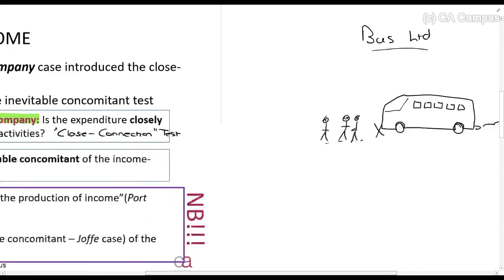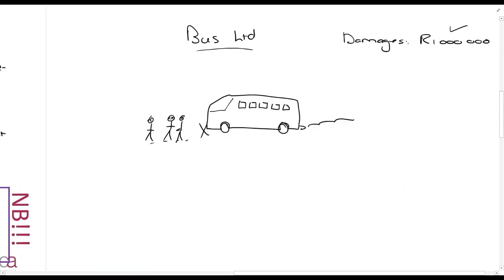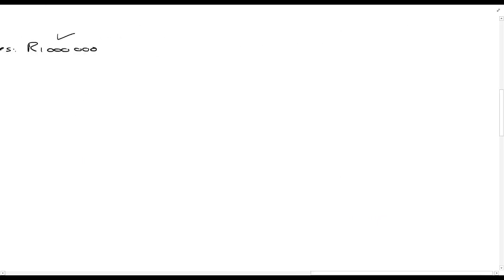The Jaffe case said, is it an inevitable concomitant? That's what we really saw. Is it an unavoidable part? Now, what I want to just explain to you about the Jaffe case is the following. Again, it's loosely adapted to the case.